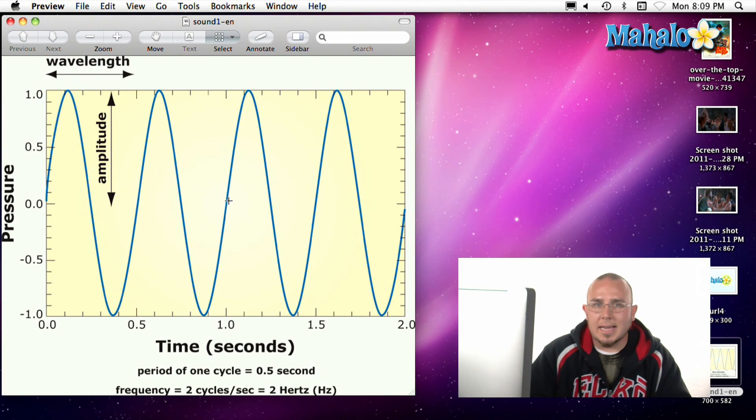A kilohertz is cycles per second to the tenth power, no, it's cycles per second cubed to the tenth power, not ice cube, but cubed.